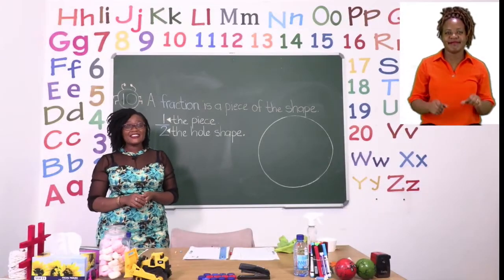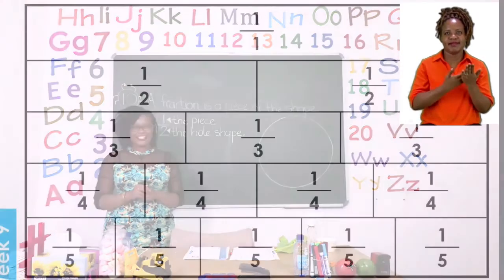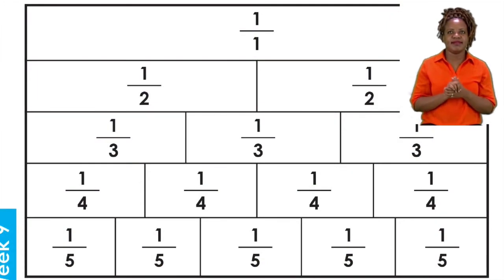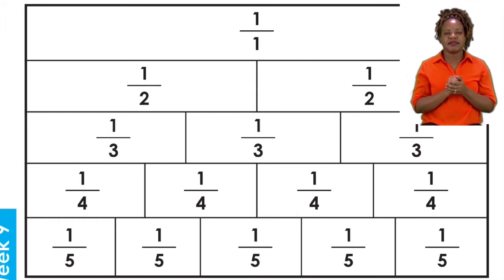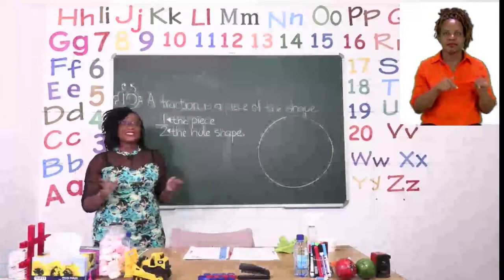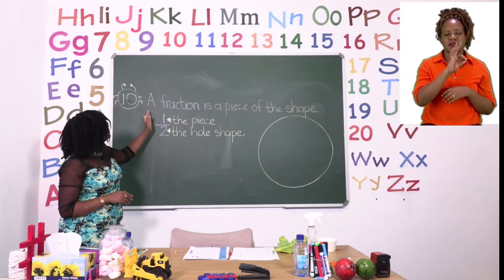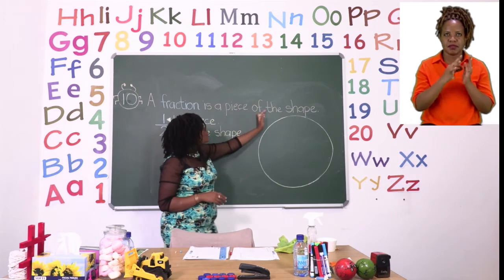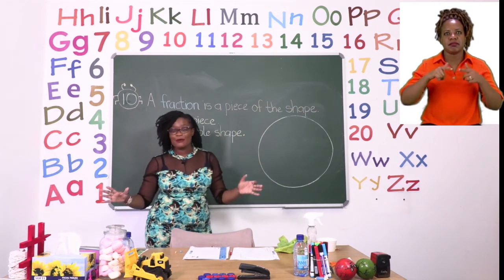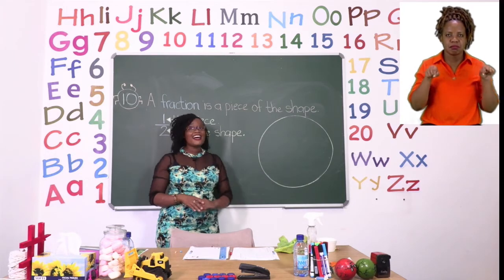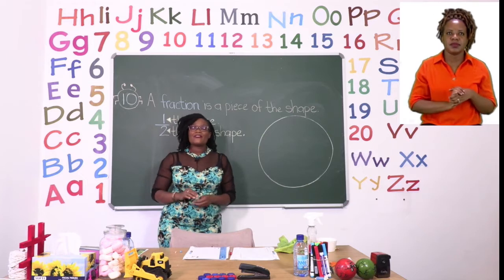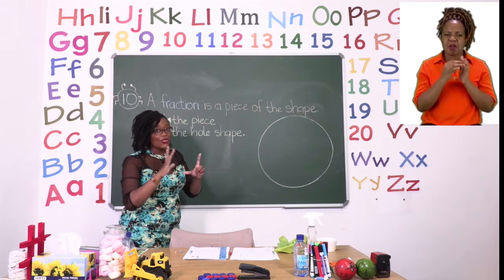For our exercise now, boys and girls, let us turn to page 10. On page 10, we are going to be doing fractions. I know what you can see right now may be a little bit confusing, but don't worry, I'm going to explain all of it to you. Let's take a look at the board. The first thing you need to know about a fraction is that a fraction is a piece of the shape. It can be any shape — a square, a rectangle, or a circle. When we are talking about a fraction, it is only a piece, not the whole thing.